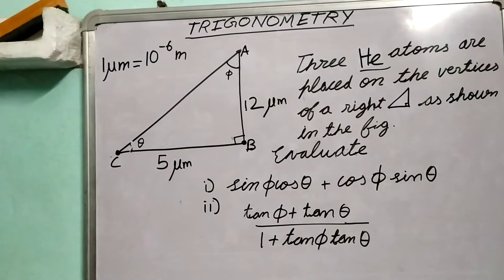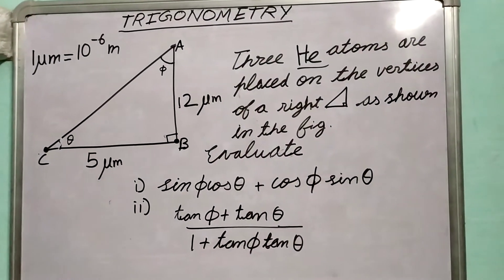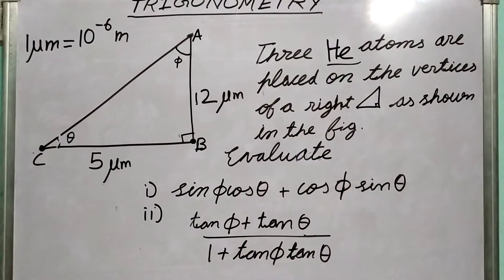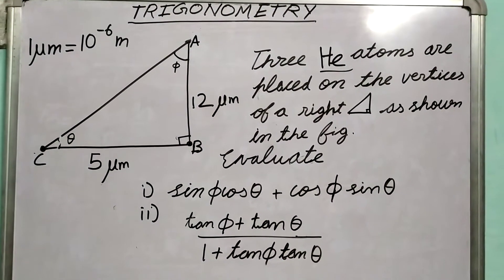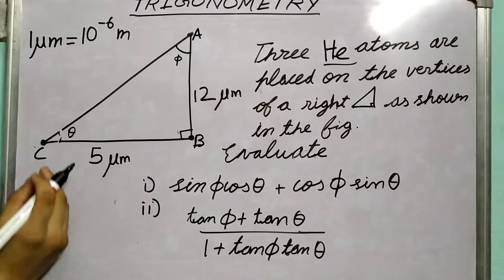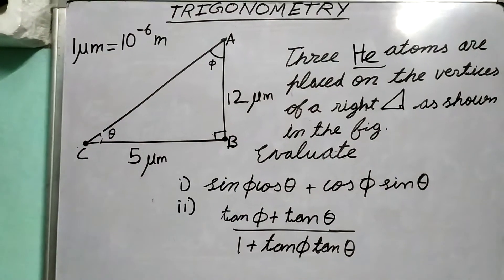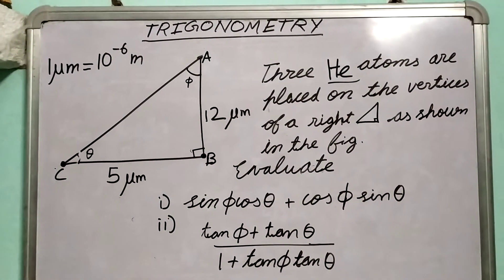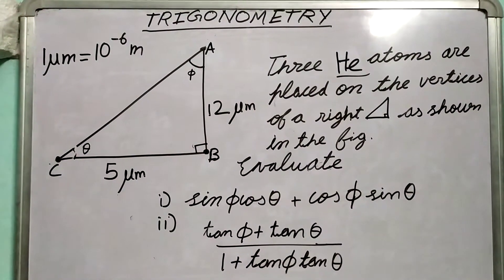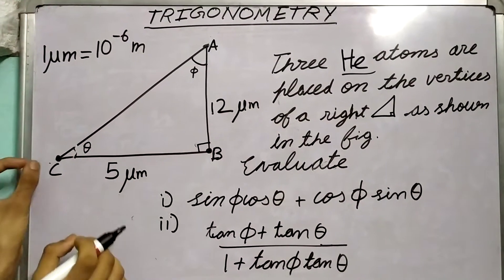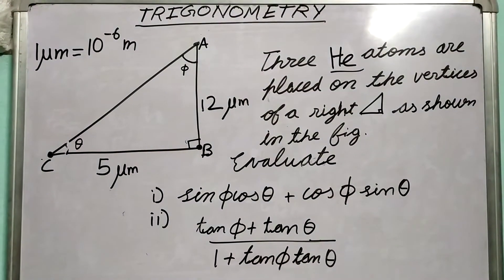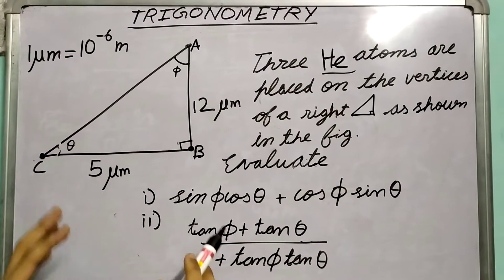We chose helium because helium atoms are not going to attract or form bonds with each other, and their sizes are very small — the diameter may be around some Angstroms, which is 10 to the power of minus 10 meters — so we can neglect that size compared to the 5 micrometer scale of the triangle.